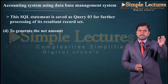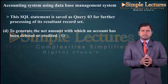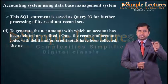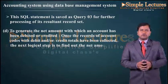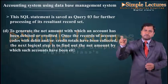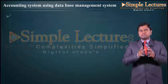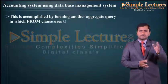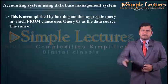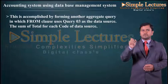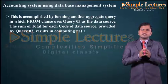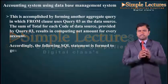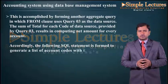To generate the net amount by which an account has been debited or credited, once records of account codes with debit or credit totals have been collected, the next logical step is to find the net amount for each account. This is accomplished by forming another aggregate query in which the FROM clause uses Query 03 as the data source. The SUM of total for each code from Query 03 results in computing the net amount for every account.